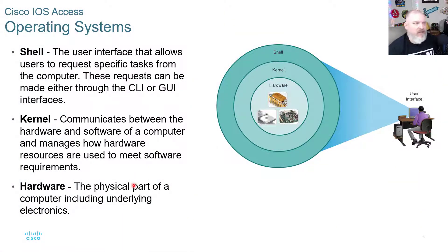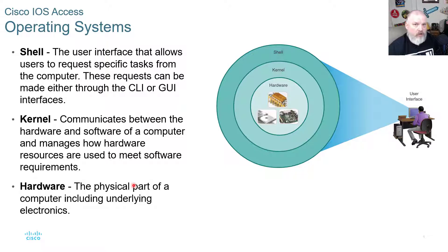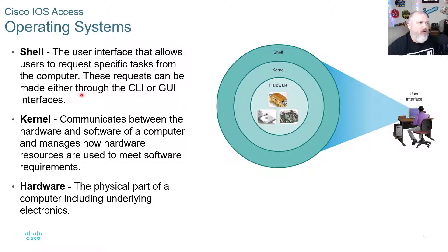What is Cisco IOS? It is the operating system on routers, switches, and other Cisco hardware. It's just like a Windows computer, a smartphone, or a Linux device — they all have operating systems that allow us to communicate to the hardware. Through the operating system on the IOS, we have the shell, which is the user interface that allows users to request specific tasks from the computer.